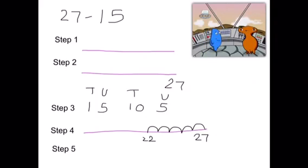Step 5. Now we take away the 1 ten that we have. So if we take away 10 from 22, we land on 12. So the answer to 27 take away 15 is 12.